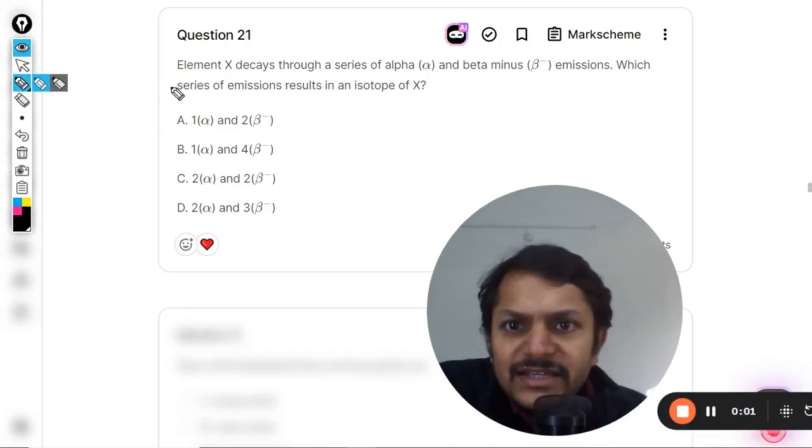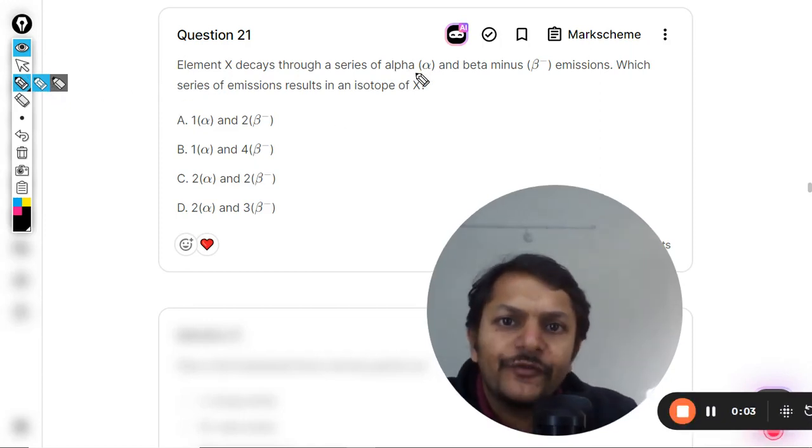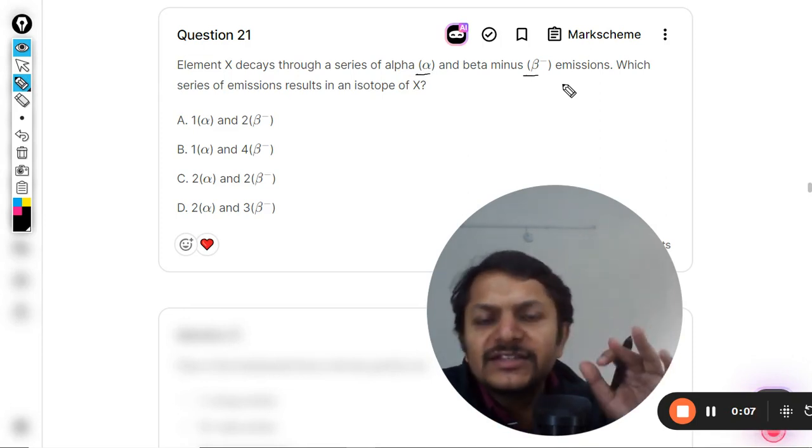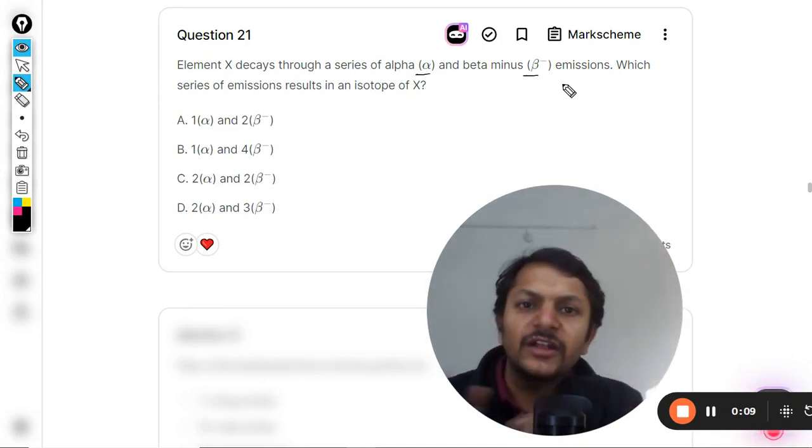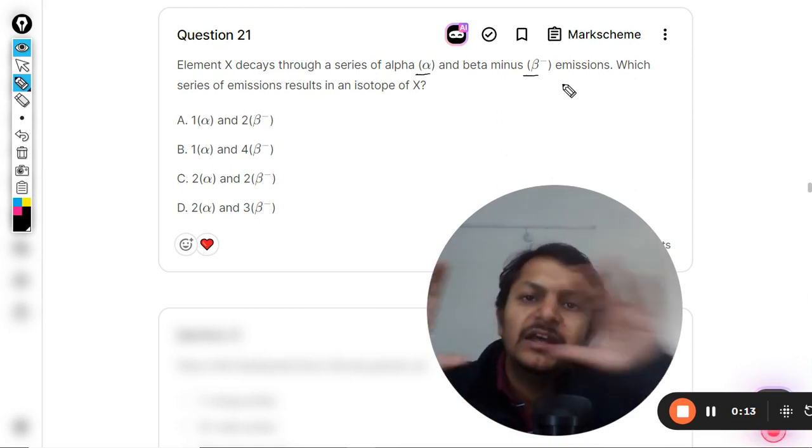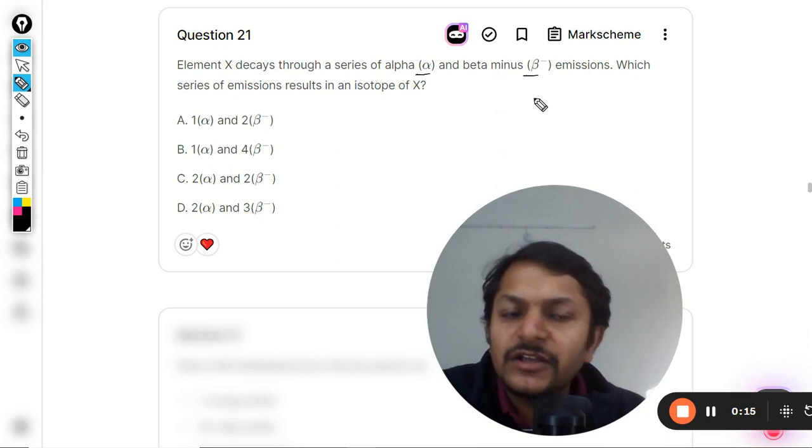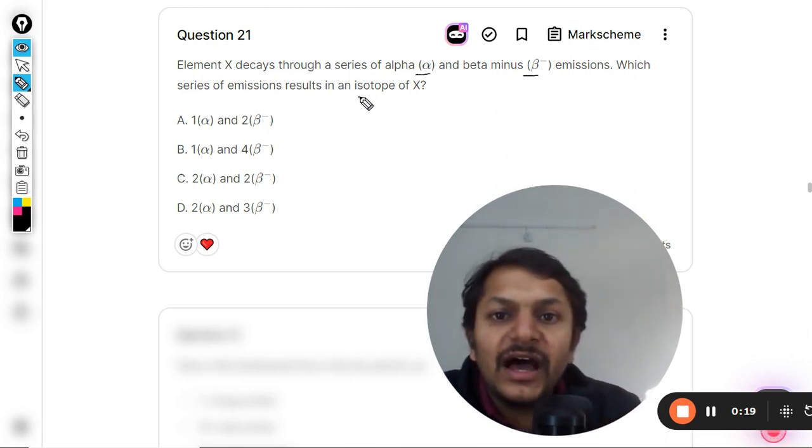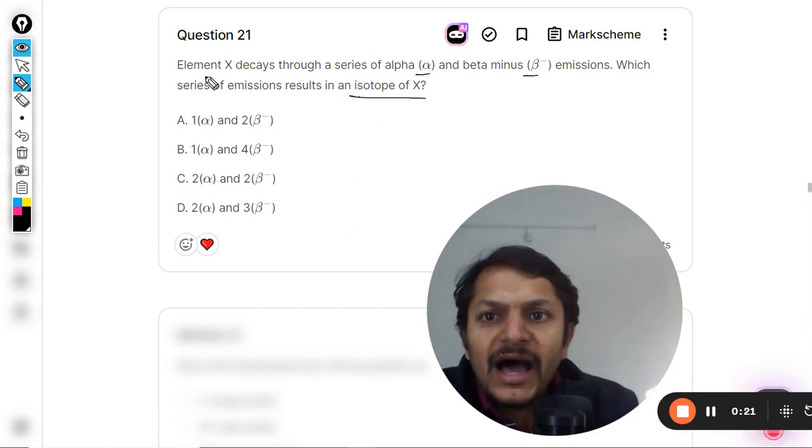Question: Element X decays through a series of alpha and beta minus emissions. This kind of thing is known as a decay series - first alpha takes place, then one beta negative, then beta positive, and so on. Which series of emissions results in an isotope of X?